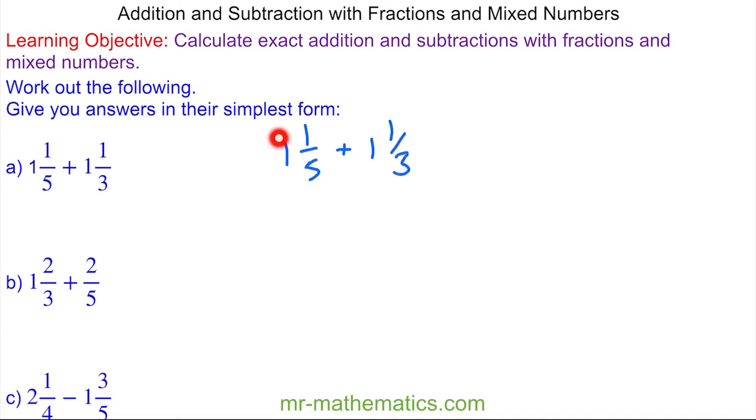I'm going to begin by adding the integers one and one to make two. Now I have one-fifth added to one-third, and to add these together I need a common denominator which I'm going to choose as fifteen because five goes into fifteen three times and three goes into fifteen five times.